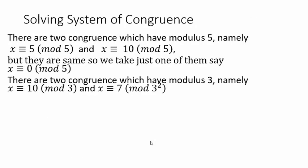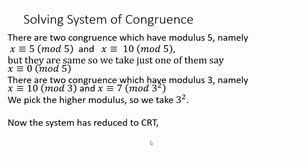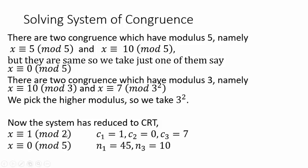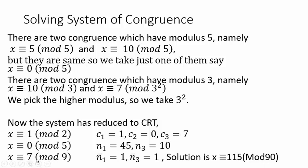We now have three congruences with pairwise coprime moduli: X ≡ 1 mod 2, X ≡ 0 mod 5, X ≡ 7 mod 9. Applying the Chinese Remainder Theorem gives X ≡ 115 mod 90. Note that since C2 = 0, that term vanishes automatically. Thus, any system where the moduli are not pairwise relatively prime can also be reduced to a CRT-applicable form.